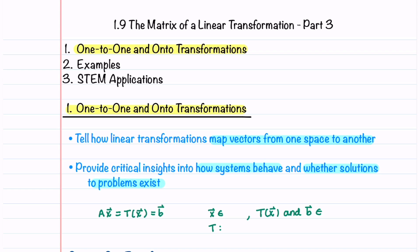In order to understand one-to-one and onto transformations, we first need to review how the transformation T of x is defined. In this transformation, A is an m-by-n matrix, x is an n-by-1 column vector, and then T of x or b is an m-by-1 column vector. This means that x is an element of R^n and T of x and b are elements of R^m. Our transformation T maps vectors from R^n to R^m.